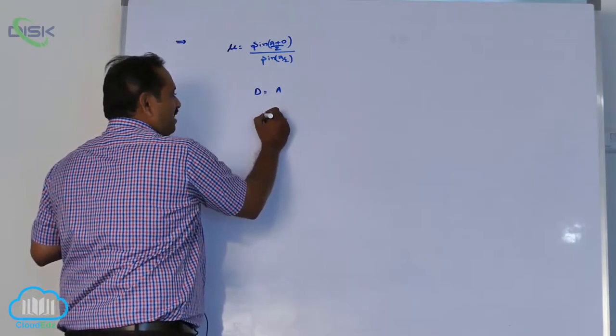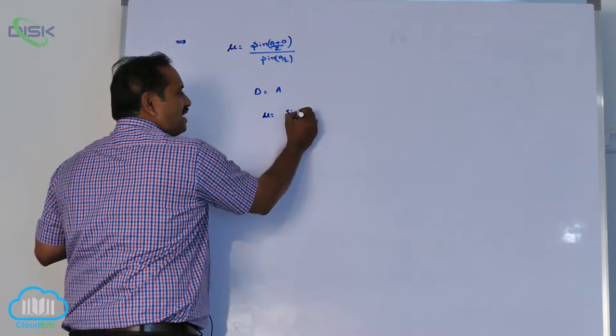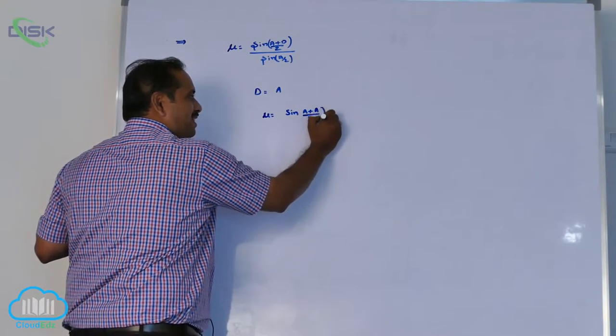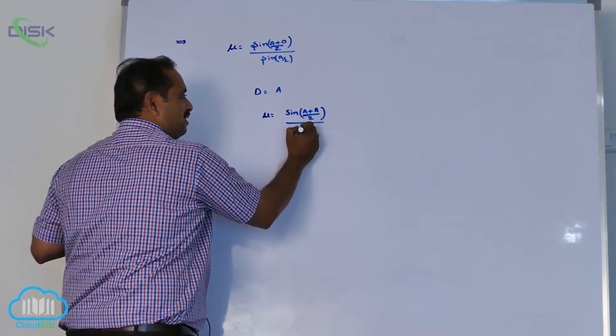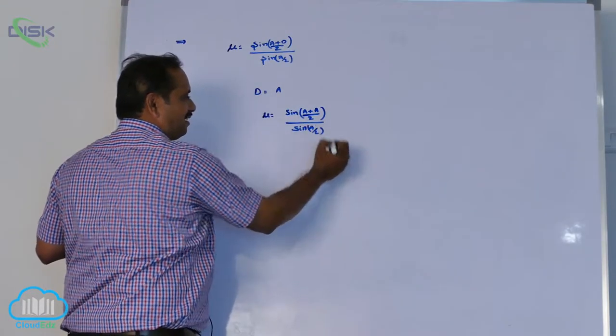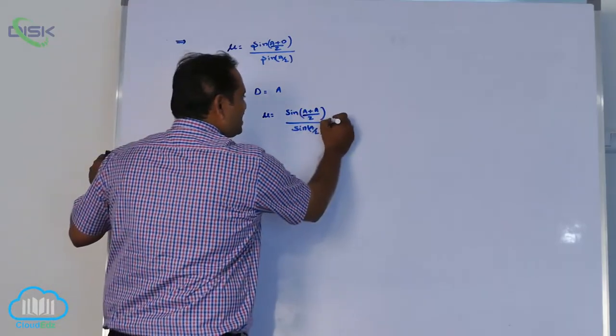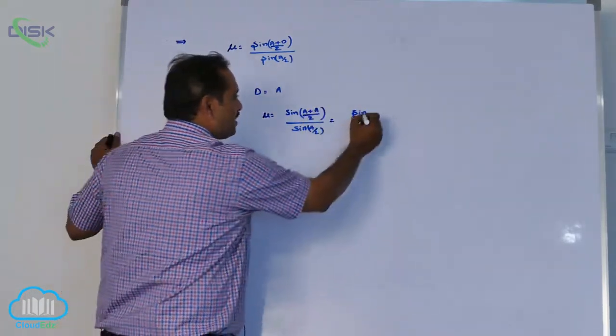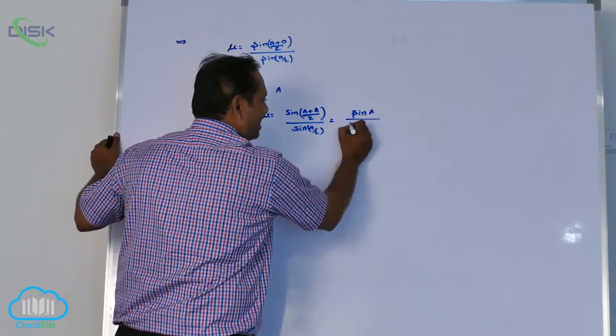d equals a, mu equals sin of (a plus capital A) by 2. Because a equals d, sin a by 2. a plus a, sin of 2a by 2, sin a by sin a by 2.